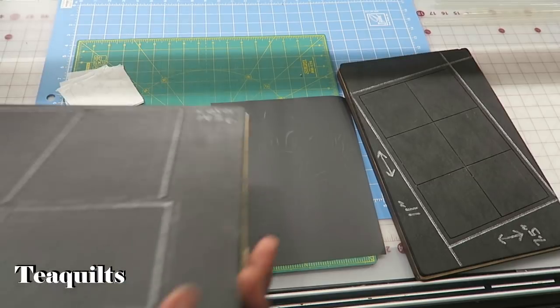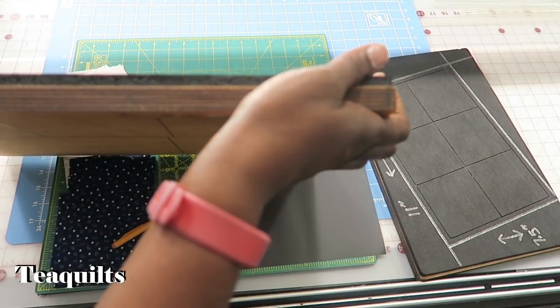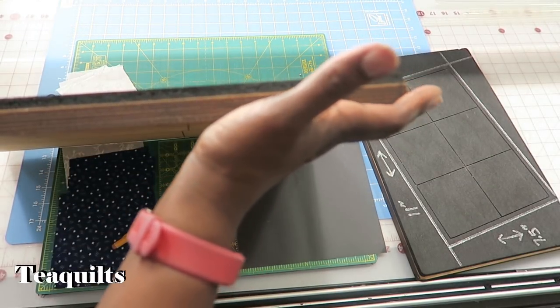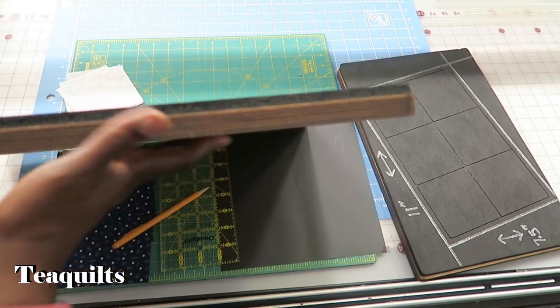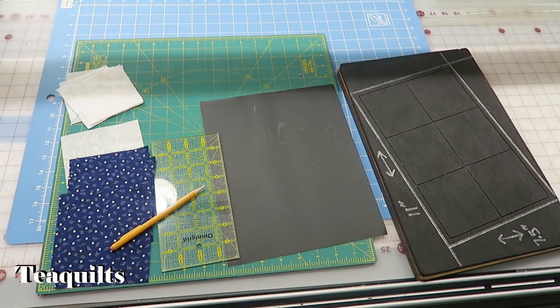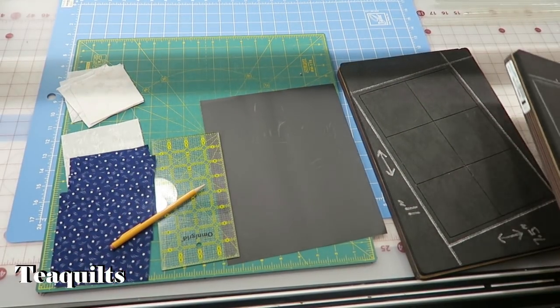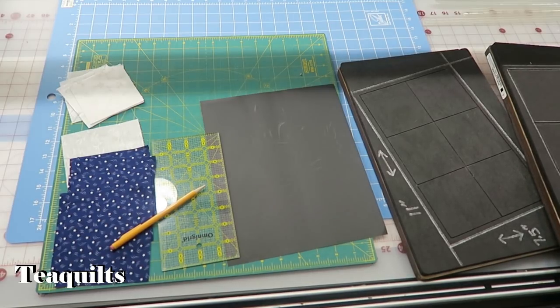This Take Five board is AccuQuilt number 55223, and this one will only work in the studio. If you have the GO! die system, you can also use die number 55060.